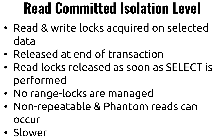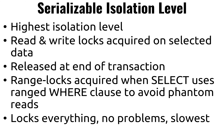So to summarize, this is a table that covers the various levels of isolation: read uncommitted, read committed, repeatable reads, and serializable. Read uncommitted doesn't address any inconsistency risks. Read committed addresses dirty reads. Repeatable read addresses both dirty reads and non-repeatable reads. And finally, serializable addresses all three inconsistency risks.